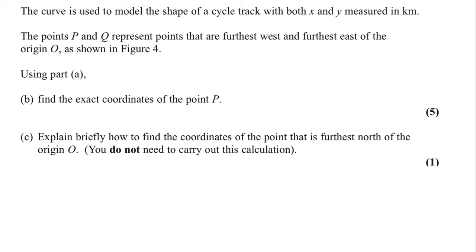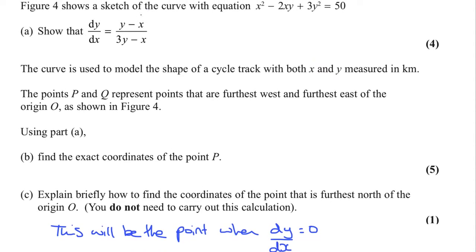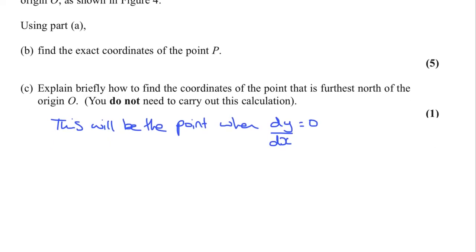It just wants us to explain how we would find it. So, we would find it by when dy by dx is equal to 0. Rather than us setting the bottom to be 0, it would be when y minus x is equal to 0, or y is equal to x. It doesn't actually want us to do any more than that. You don't need to carry on and find the point. It just wants us to explain how we would know where to find the point.